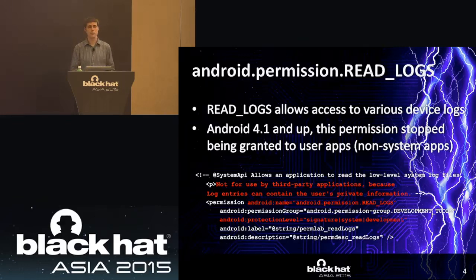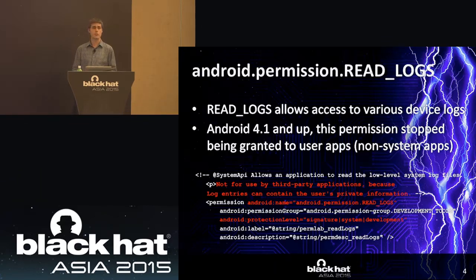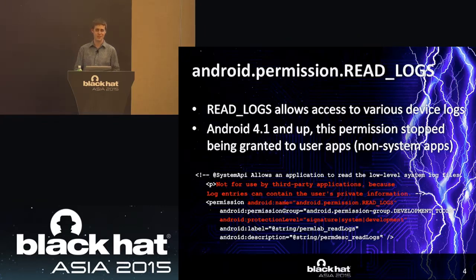In the Android manifest XML from the Android package, there's an XML comment explaining why the permission was taken away — essentially because it can contain private data. The read logs permission's protection level is system, signature, or development. Your application needs to be signed with a platform key, installed on the system partition, or a user can explicitly grant this permission via ADB shell PM grant with the package name and the read logs permission.